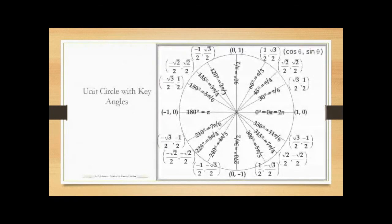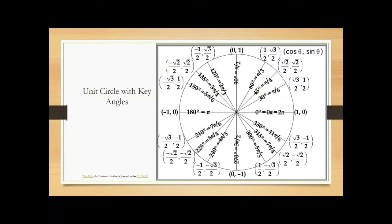When you have the unit circle, it's really important to know the angles, their conversion between radian measure and degree measure, and the ordered pairs. You can derive the ordered pairs using SOHCAHTOA and the Pythagorean theorem. I've emailed out a PDF with a neat version of the unit circle image — just print it out and use it for reference so you don't have to memorize all of these ordered pairs.